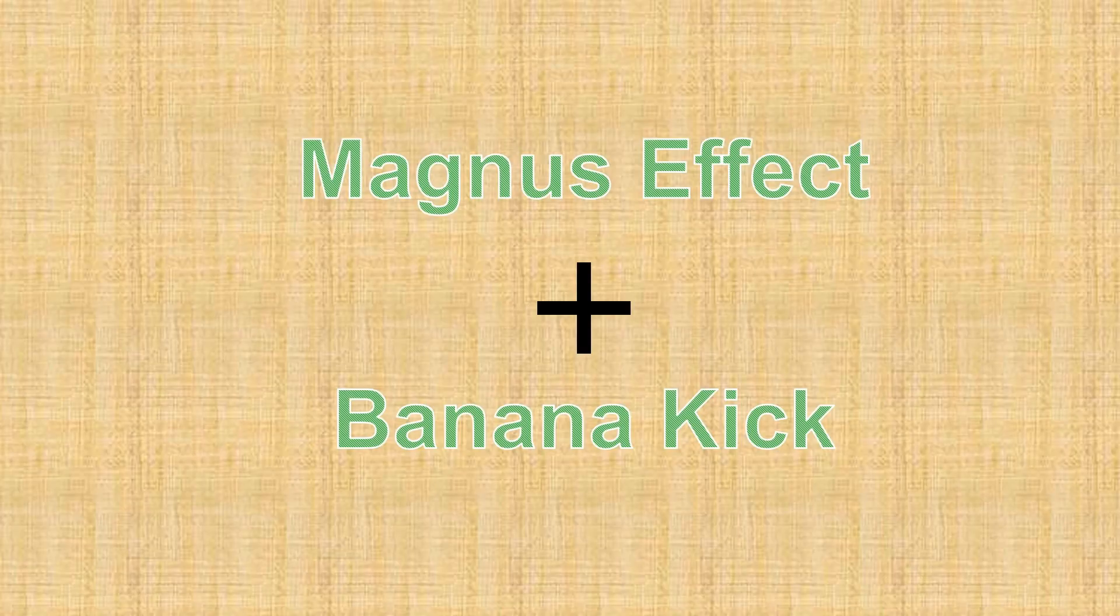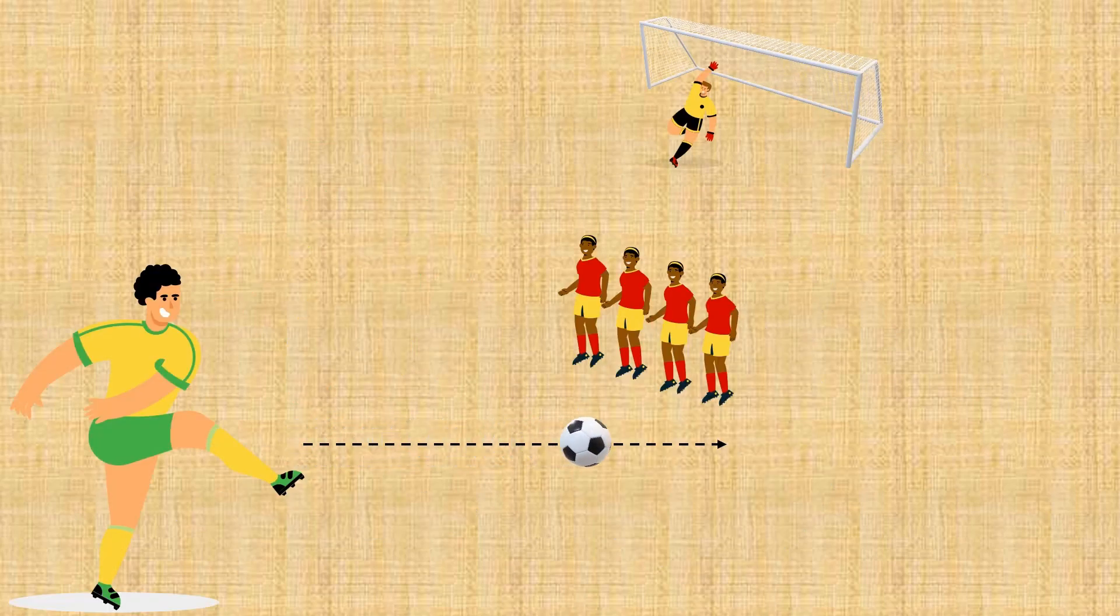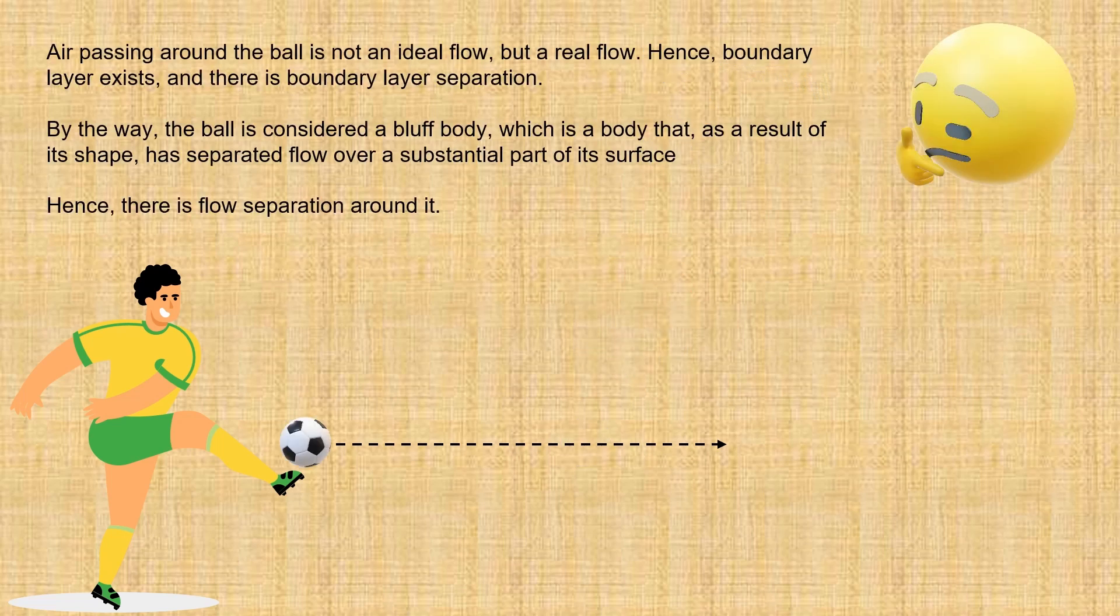So how does Magnus effect come into play in the banana kick? Carlos placed his kick at the lower right corner of the ball off-center, sending it high and to the right but also rotating around its axis. Air passing around the ball is not an ideal flow but a real flow. Hence, boundary layers exist and there is boundary layer separation.